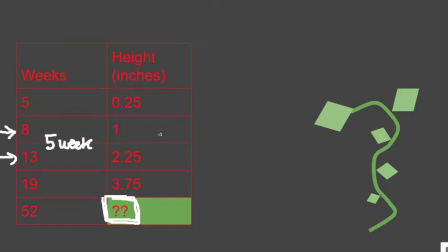Over a five week interval, the plant grows 1.25 inches. So my first question is going to be, how much is the plant growing in one week? 1.25 divided by five, you're going to get 0.25 inches per week.